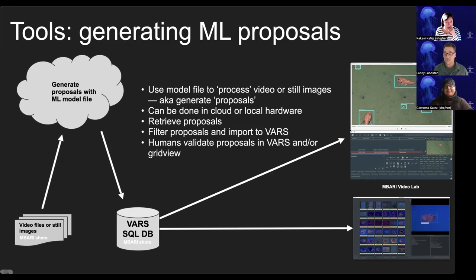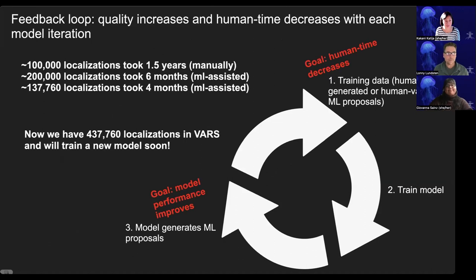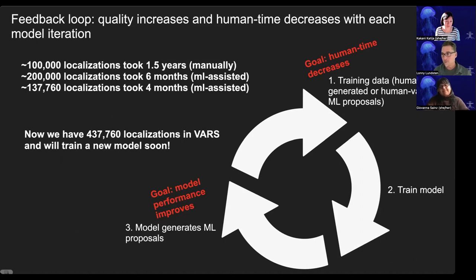Humans then validate those machine learning proposals within VARS using a video player called Shark Tapota 2 and another tool called GridView. There's a feedback loop here: you use training data — either human-generated or human-validated ML proposals — to train a model, use that model on new data to generate new proposals, then train a new model. The cycle continues with the goal that human time decreases and model performance improves.